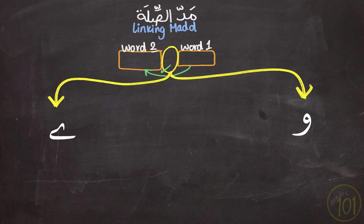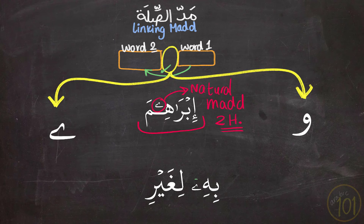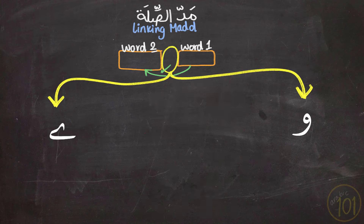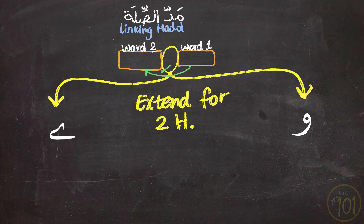But this time, they're not part of the word — they will only be visible between words. The Natural Mad must be extended for two Harakāt at all times and happens inside the word. The Linking Mad occurs only between words and will be pronounced only if you're linking between the two words or continue reading. When the Linking Mad happens, you will extend it for two Harakāt. Let's look at some examples.